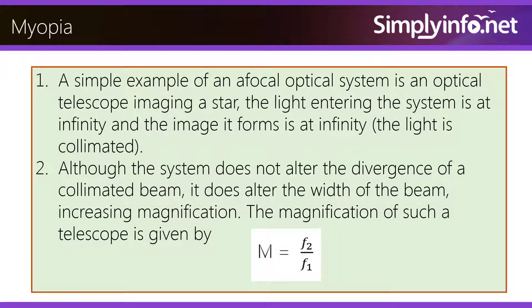Myopia. A simple example of an afocal optical system is an optical telescope imaging a star. The light entering the system is at infinity and the image it forms is at infinity; the light is collimated. Although the system does not alter the divergence of a collimated beam, it does alter the width of the beam, increasing magnification. The magnification of such a telescope is given by M = f2/f1.